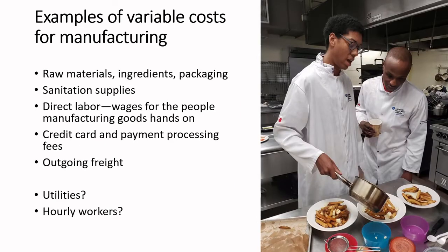Variable costs, conversely, are the cost of your raw materials, ingredients, packaging, sanitation supplies, and direct labor. If you have hourly workers they're considered variable costs because they flex up and down — if you're only making 100 units you may need one hourly laborer, but making 1,000 units you might need ten. You have to think about where labor goes in the calculation. Bookkeeping, credit card and payment processing fees are often included in variable costs, as are freight costs and utilities depending on the situation.